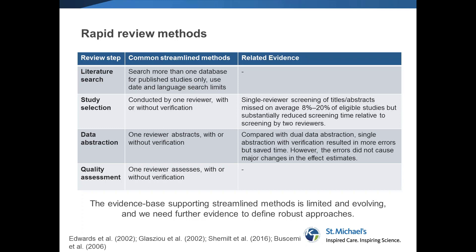This will be submitted for publication in the Journal of Clinical Epidemiology in the next month or so. When we look at the evidence base, we don't find much evidence on the implications of searching more than one database for published studies or using date and language search limitations. There is some empirical evidence suggesting you need to search more than one database, and some evidence on limiting to published studies, but we haven't found on average what the estimate of bias would be for this particular shortcut.